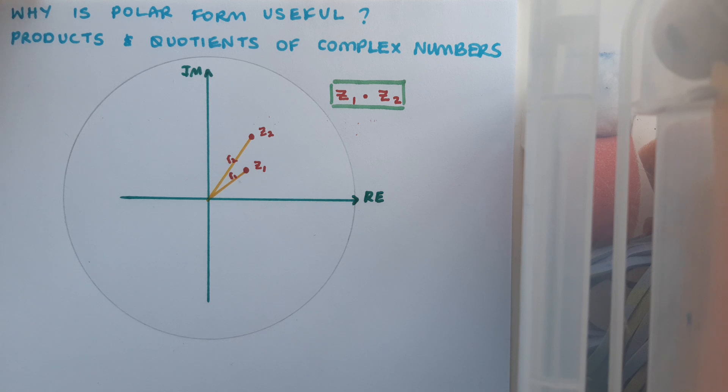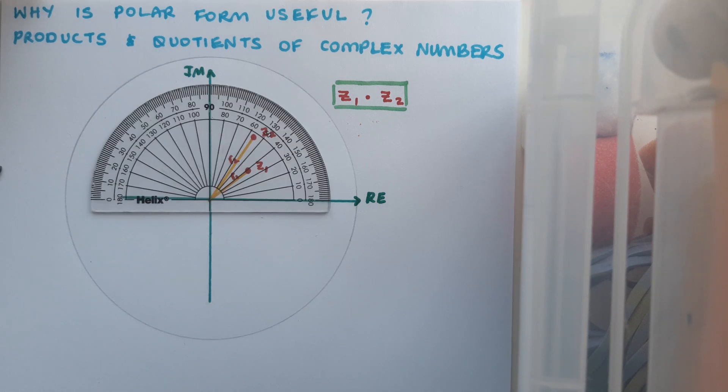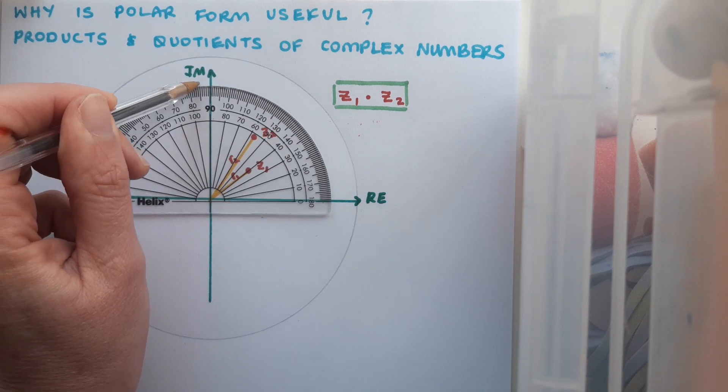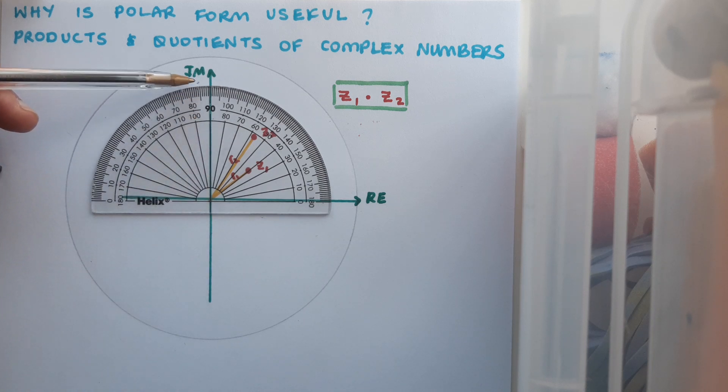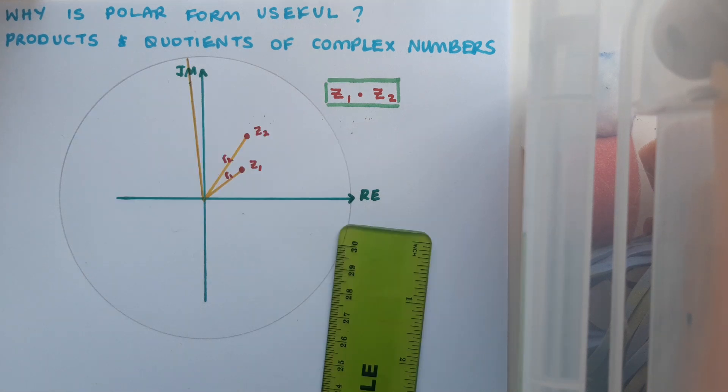Now to figure out exactly where that should be, I'm going to figure out the argument of z1 and the argument of z2 and add them together, and that's going to finally locate my product. When I measure z1 and z2's argument, I get 40 and 55. So I'll just add those together and that takes me to 95, which is located here on my protractor. Then I'll simply draw a line from my origin to this point on the circumference, and that will locate z1 times z2.